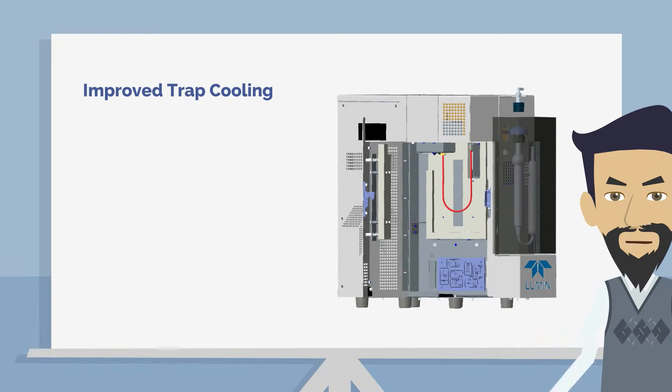This is made possible by a more powerful cooling fan and ducting that channels air from outside the unit into the trap box, thereby reducing cooling times to 90 seconds or less.